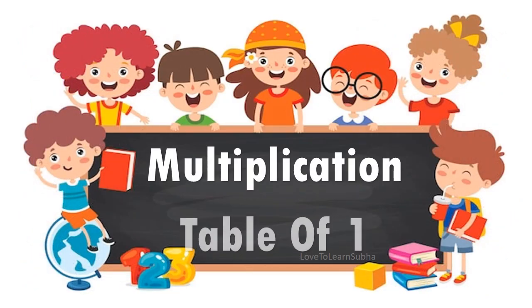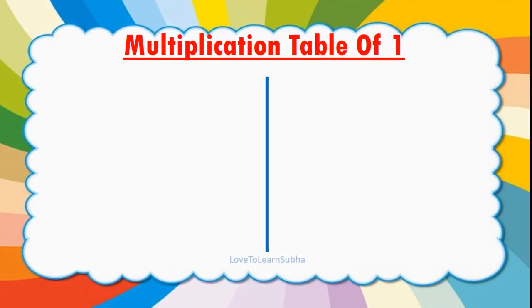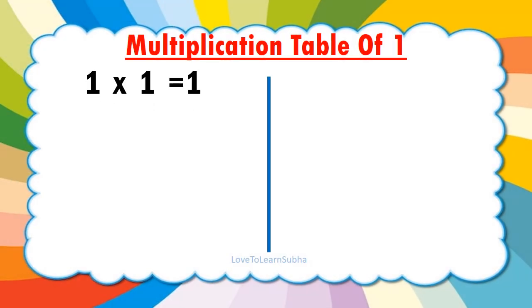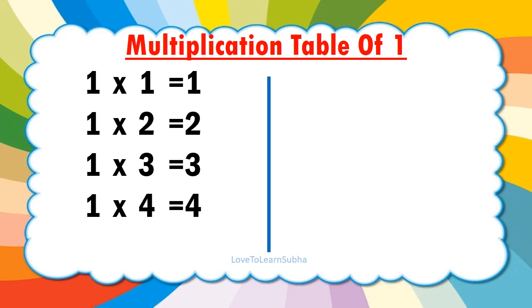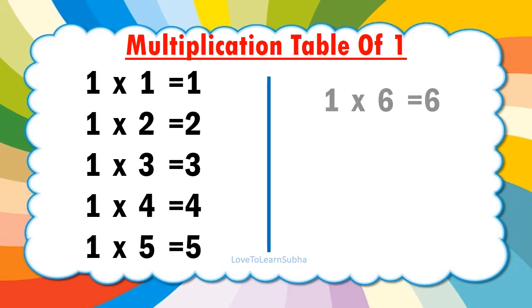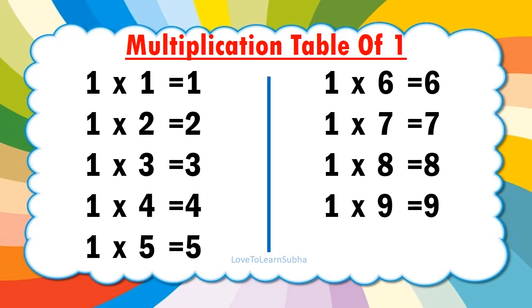Multiplication table of 1. 1 1s are 1, 1 2s are 2, 1 3s are 3, 1 4s are 4, 1 5s are 5, 1 6s are 6, 1 7s are 7, 1 8s are 8, 1 9s are 9.